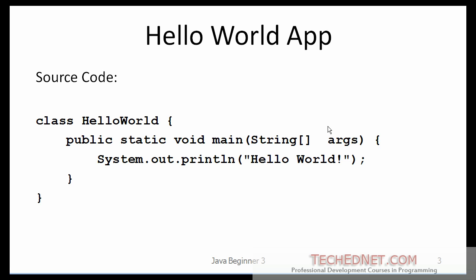Here is the source code of the application we will develop in Java. We will compile and run it, and I will tell you a little more about it. The goal is to write a function that outputs 'Hello World' to the console. If I can compile and run this application, I should be able to run pretty much anything using the JDK I have installed.